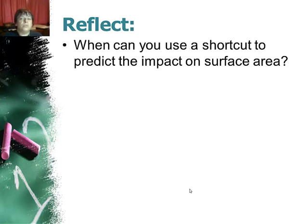So reflect. When can you use a shortcut to predict the impact on surface area? Hopefully you'll remember it's when the dimensions change proportionally. Everything is either doubled or tripled or halved. You do the same thing to all three dimensions.